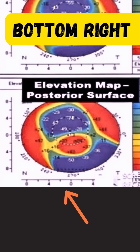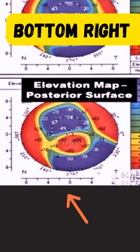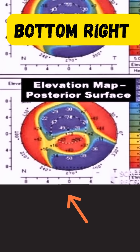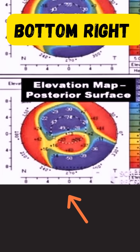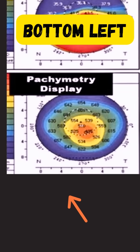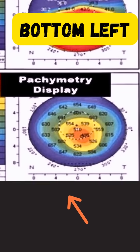Next, we have the bottom right map, which is the posterior elevation map. Pretty similar to the anterior elevation, except that subtle changes or early ectasias appear on the posterior surface before they appear on the anterior surface.